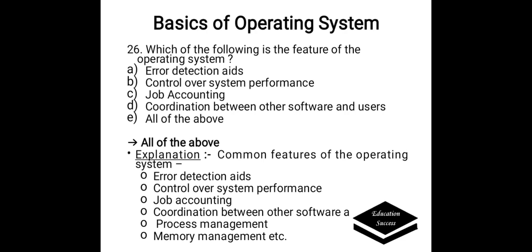Which of the following is a feature of the operating system? A. Error detection, B. Control over system performance, C. Job accounting, D. Coordination between other software and users, E. All of the above. Correct answer is E, all of the above. Common features of operating systems include error detection rates, control over system performance, job accounting, coordination between other software and users, process management, and memory management.